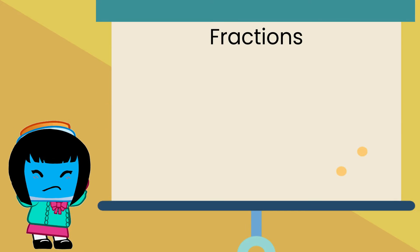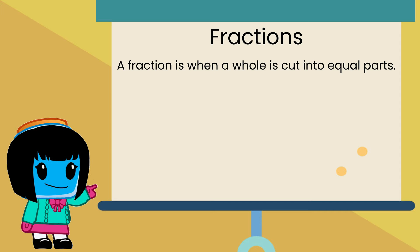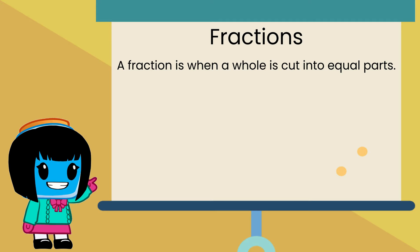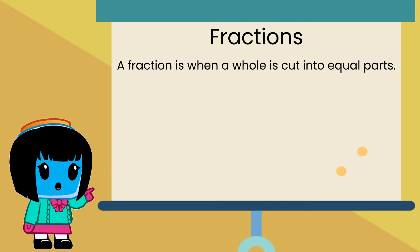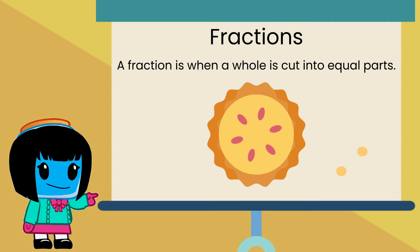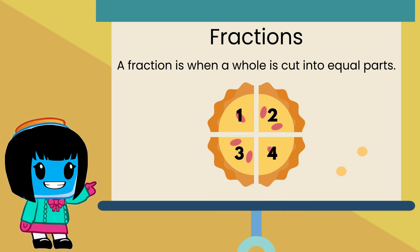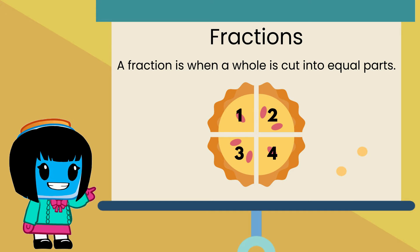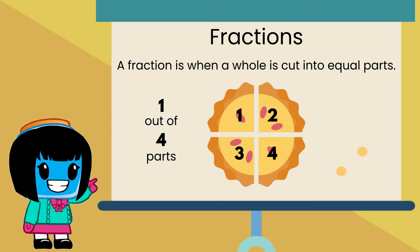You just helped Chelsea and her friends with fractions. A fraction is when a whole is cut into equal parts. In Chelsea's case, the pie is cut into four equal slices. That means each one of them gets one out of four parts, or in other words, one fourth.